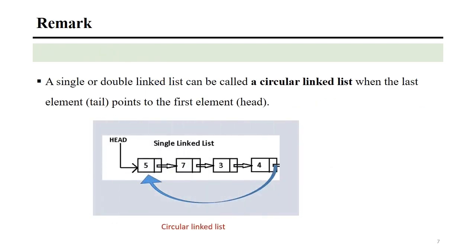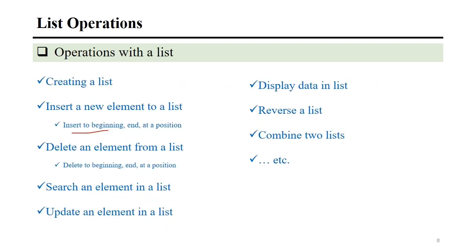There is also a notice regarding single and double linked lists: we call it a circular linked list in the case where the pointer of the tail element points to the head — meaning the last element points to the first element. These are the operations to work with a linked list: we can create a list, insert a new element — either at the beginning, end, or any specified position — delete an element from the list, search for an element, update any element, display data, and more.